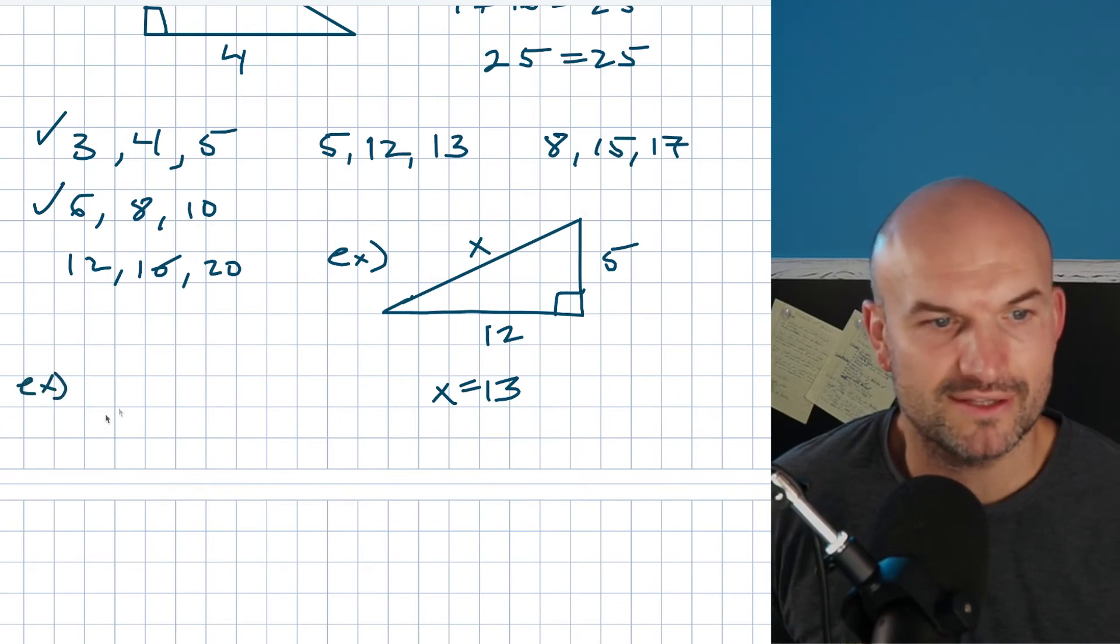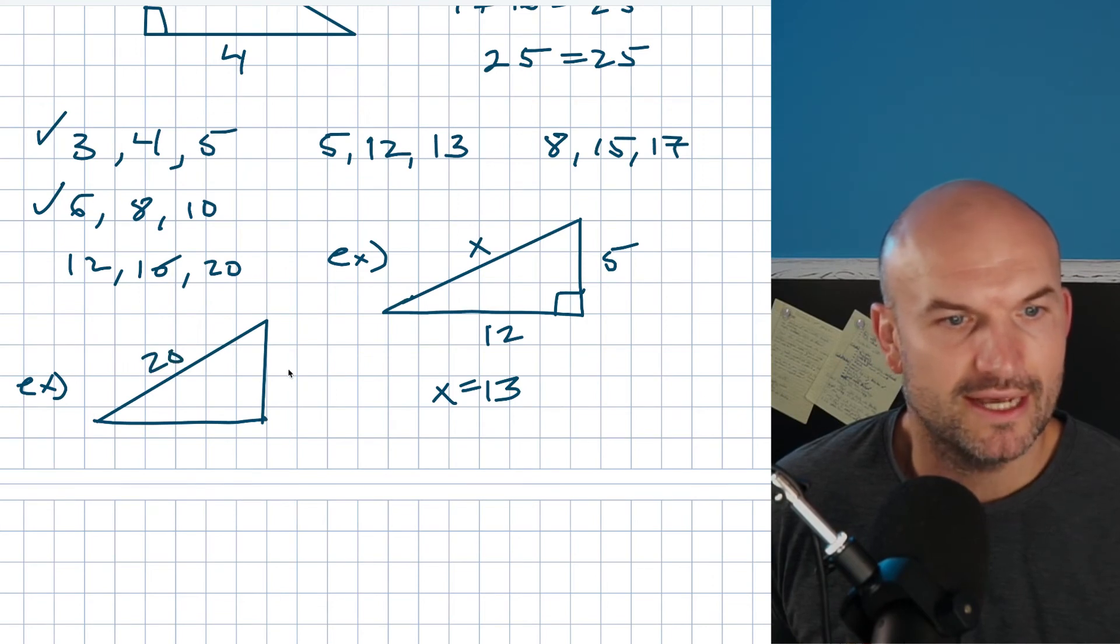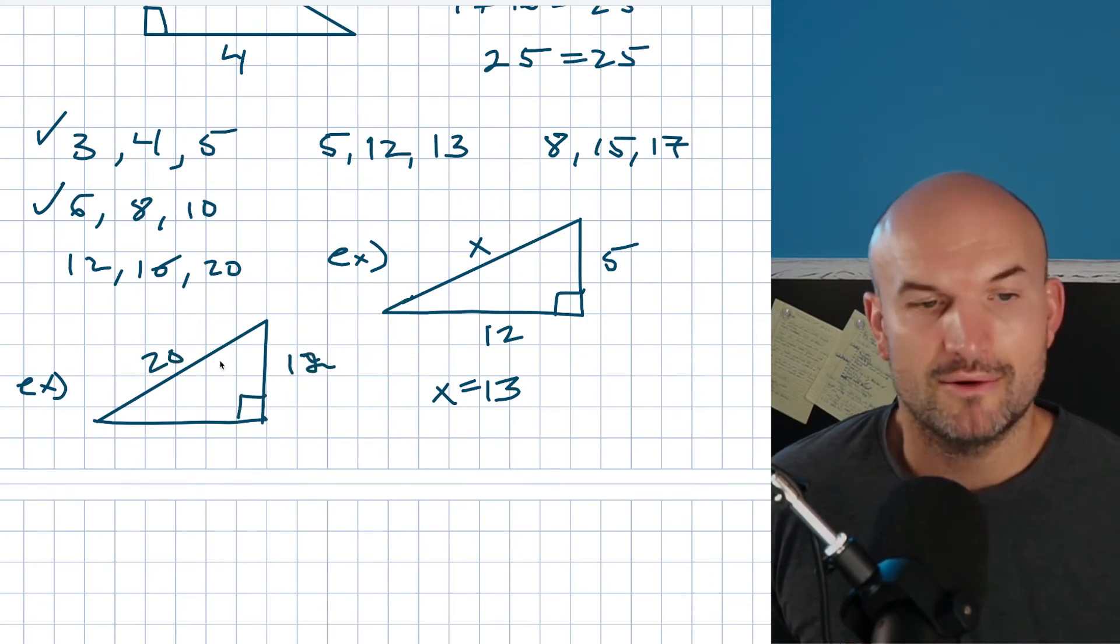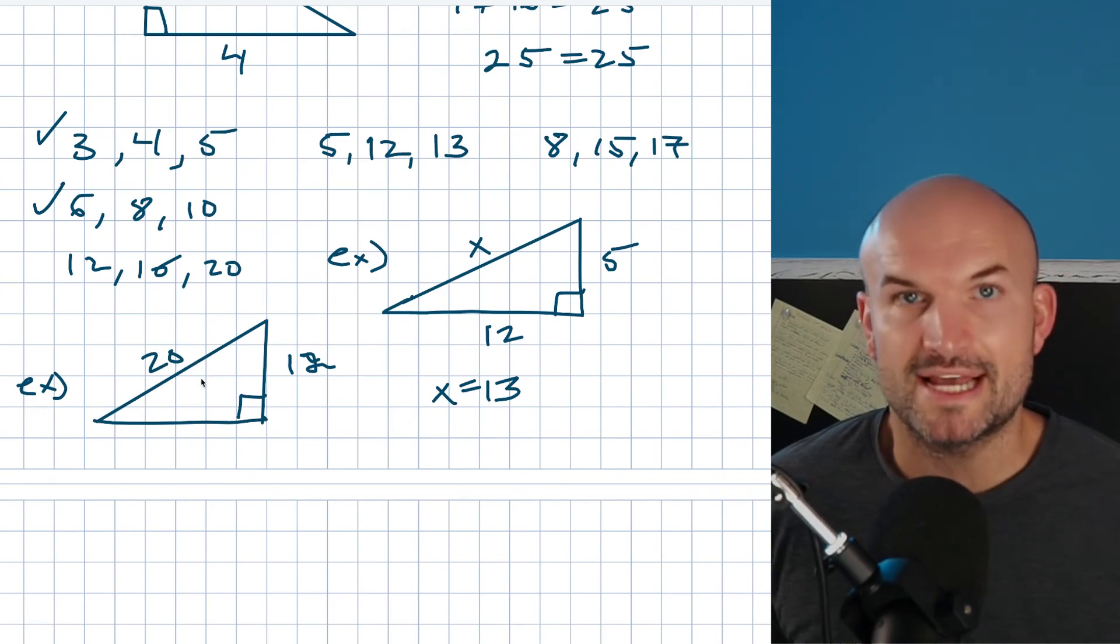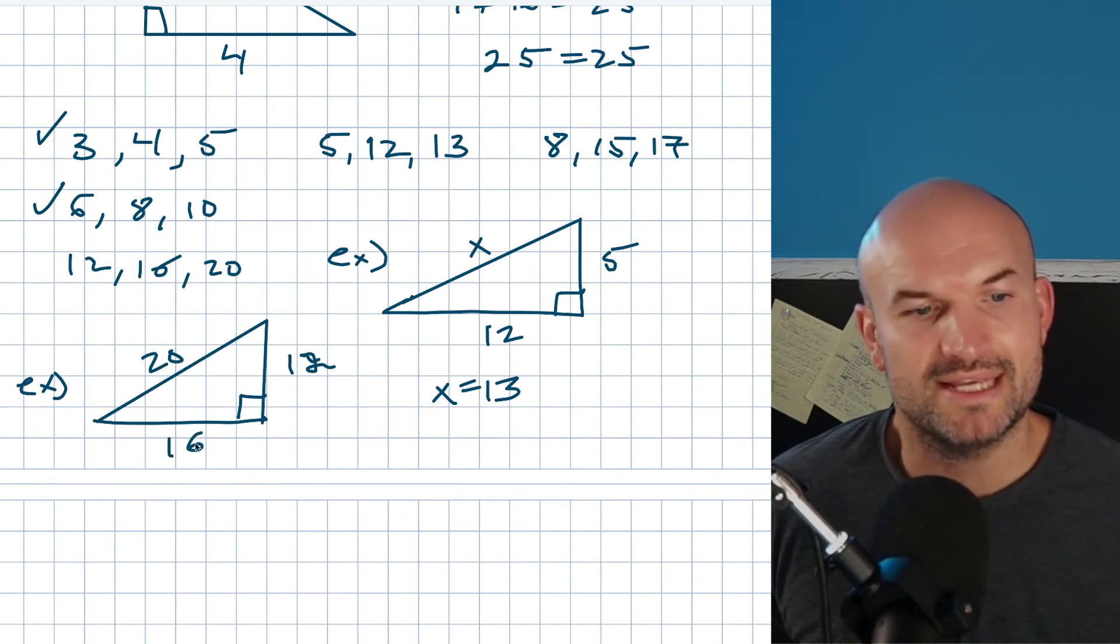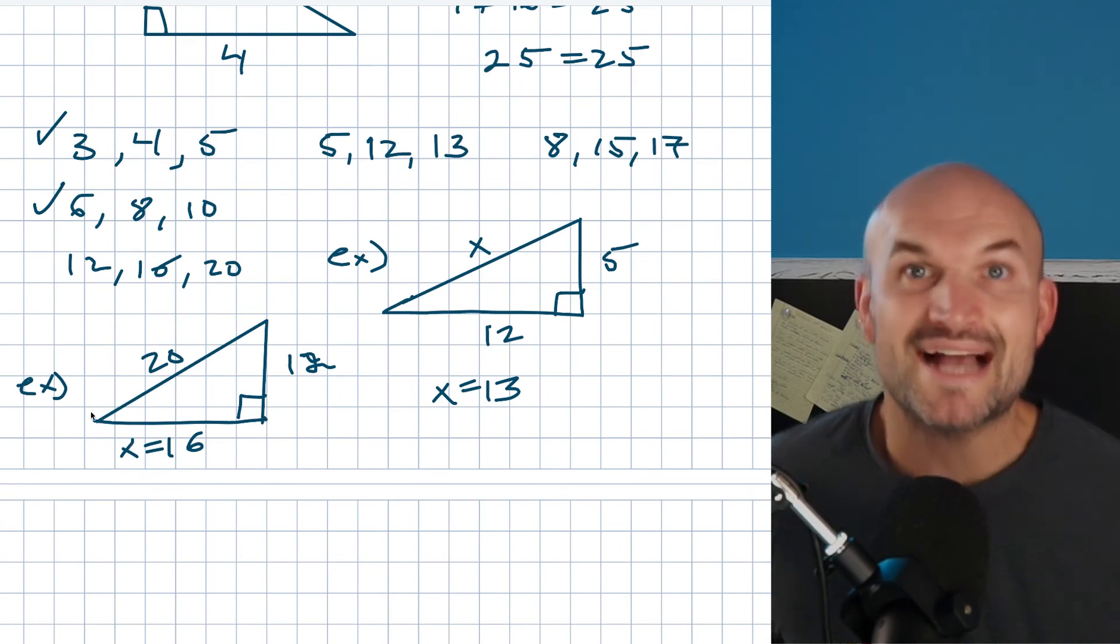The same thing kind of works here. If we did another one and let's say you had something like this, where it's a 20 and this is a 12—and again, it has to be a right triangle—if you notice, 'Oh, this looks like a Pythagorean triple,' you say 'Yeah, that's supposed to be,' let's call that X, X equals 16.